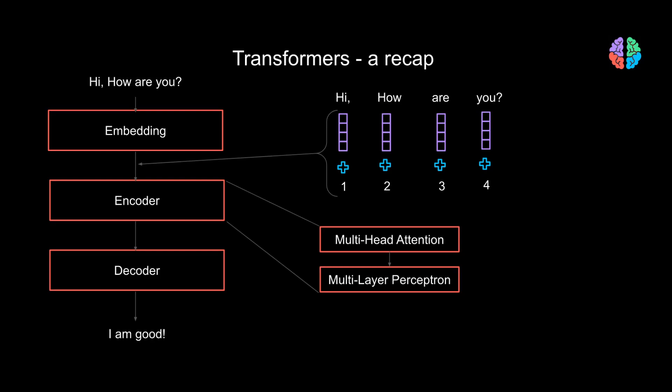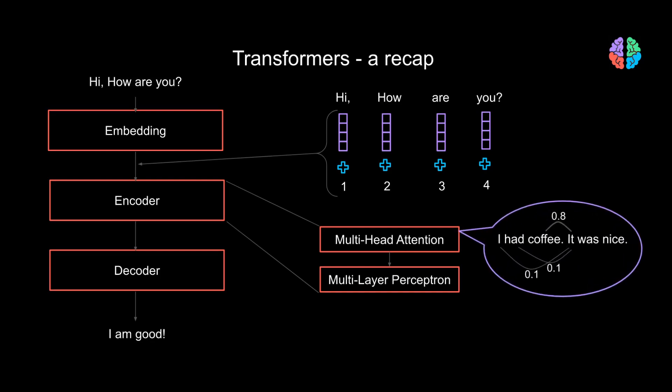The encoder is composed of a multi-headed attention layer and a multi-layer perceptron. While we are quite familiar with the multi-layer perceptron, multi-headed attention is a novelty in transformers. Take the example of the sentence 'I had coffee. It was nice.' For each word in the input, the multi-headed attention learns association with all other words — in this example, 'it' refers to 'coffee' and not 'I' or 'had.' The layer is called multi-headed attention because the input is split into several heads so that each head can learn different levels of self-attention. The outputs of all heads are then concatenated and passed through the multi-layer perceptron.